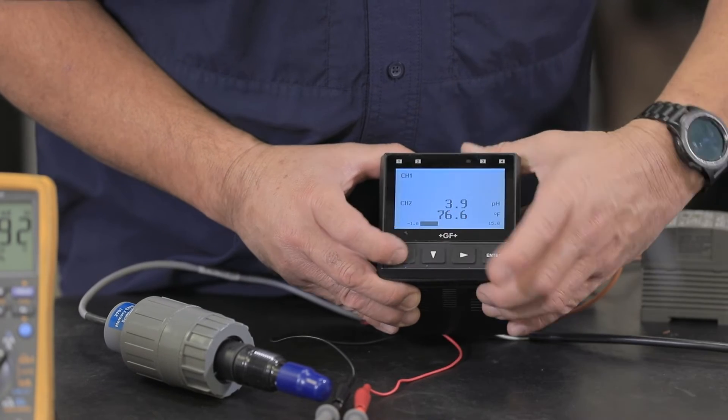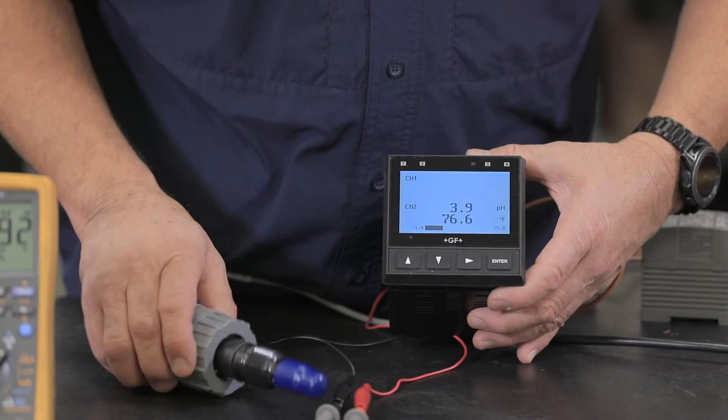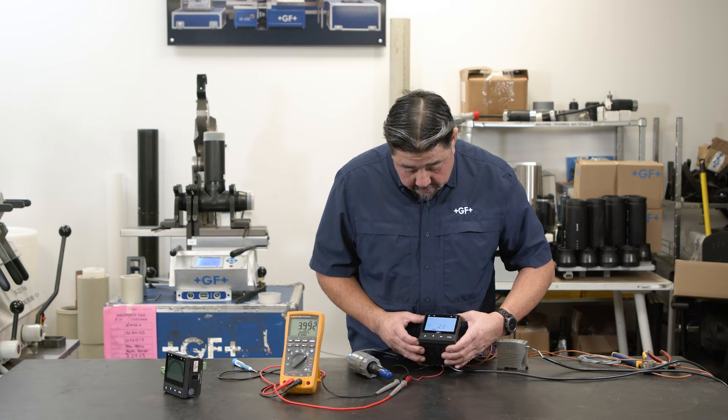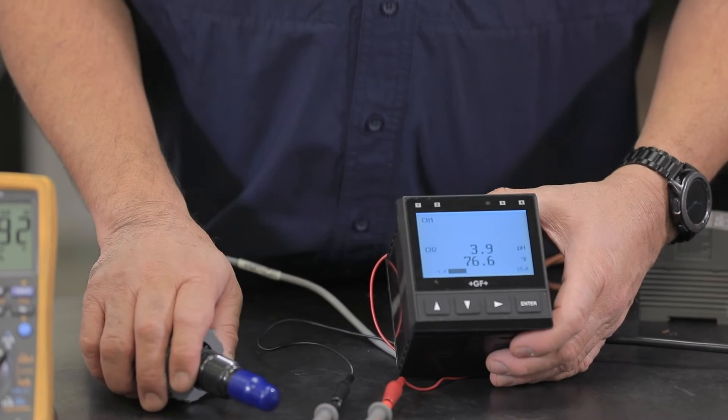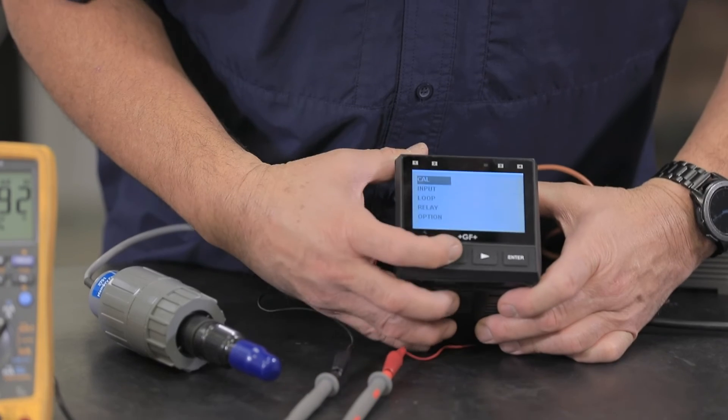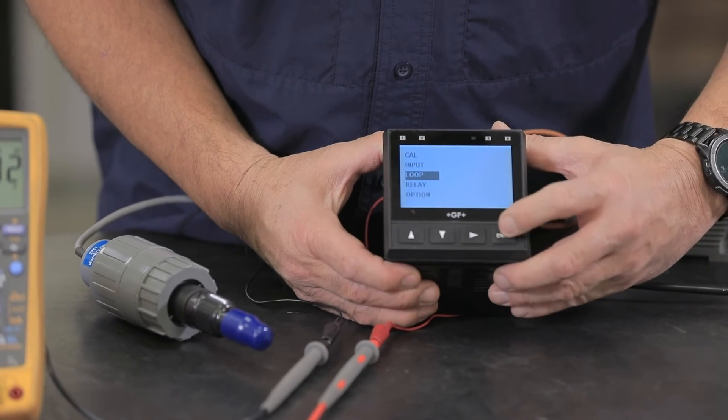So right now channel two is showing 3.9 pH, 76 degrees F. So right now we're at 3.9 pH, let's set our loop output. Press and hold the enter button, arrow down to the loop menu, press enter.